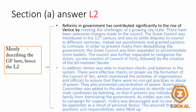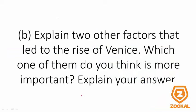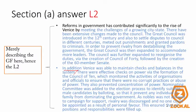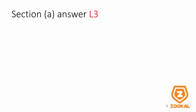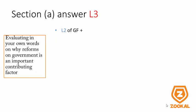Another way to present such a large quantity of information is to use linkers. So you use 'in addition' and change paragraphs — this is just one way to show the examiner. After L2, obviously you will be looking at L3. L3, of course, is evaluating on how reforms in government leads to the rise of Venice — you are linking reforms in government and explaining how it leads to the rise of Venice.